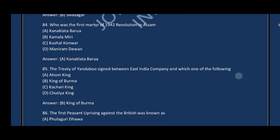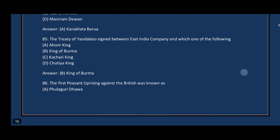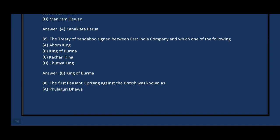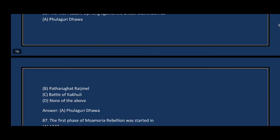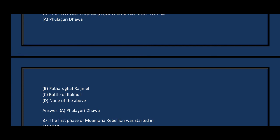Question number eighty-five: The Treaty of Yandaboo was signed between the East India Company and which of the following? The correct answer is option B — King of Burma. Question number eighty-six: The first peasant uprising against the British was known as — the correct answer is option A, Phulaguri Dhawa. The Phulaguri Dhawa took place in 1861, in the present-day Nagaon district.